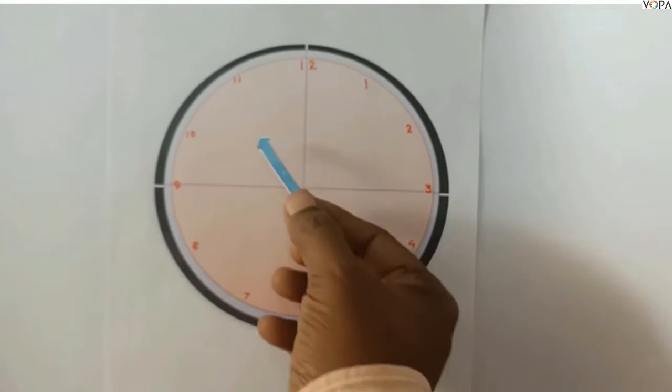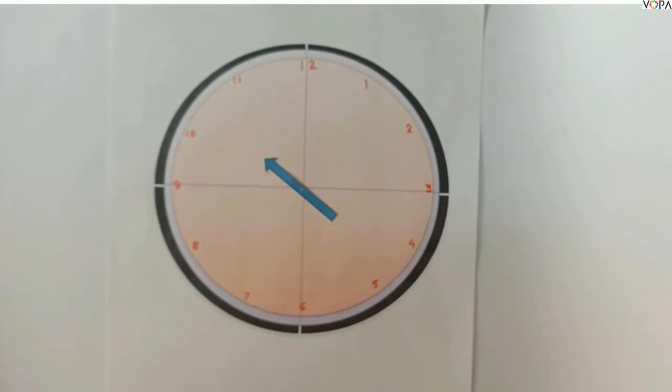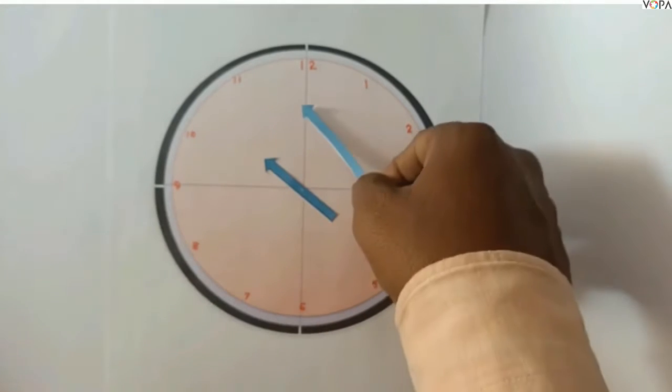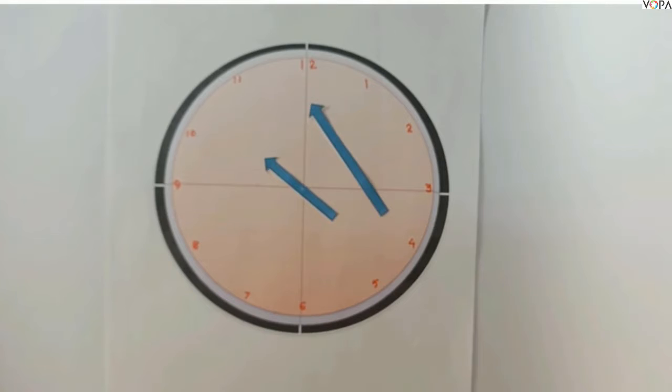This is short hand and this is long hand. With the help of these two hands we are going to learn how to read the clock.